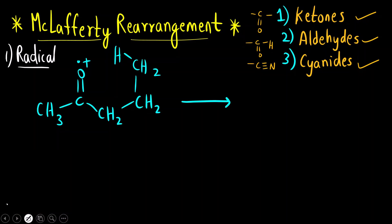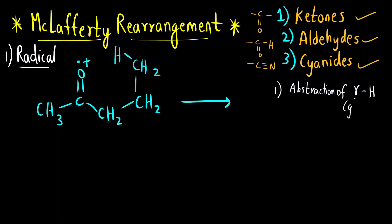So what are the key points of McLafferty rearrangement? First is: which proton is abstracted? The gamma hydrogen, or we can say gamma proton. Now what is gamma hydrogen? This is a carbonyl group, and the carbon next to the carbonyl group is alpha. The carbon next to alpha is beta, and the carbon next to beta is gamma.